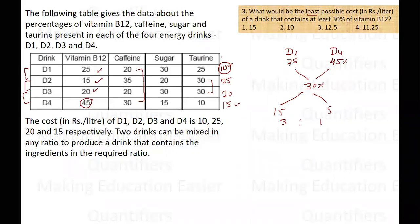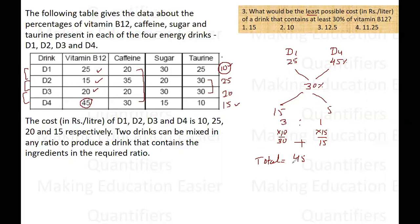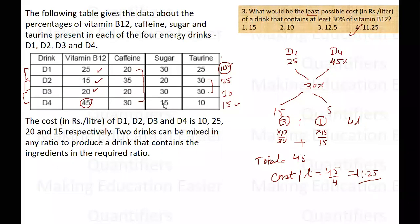So D1 and D4 must be mixed in the ratio 3:1 — three litres of D1 and one litre of D4. Cost for 3 litres of D1 is 30 rupees, cost for 1 litre of D4 is 15 rupees, giving a total cost of 45 rupees over 4 litres. Therefore the cost per litre is 45 divided by 4, which equals 11.25 rupees per litre — option 4.